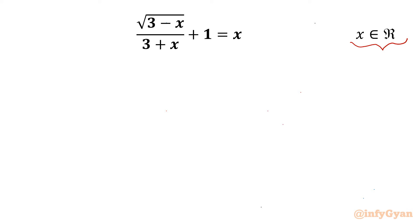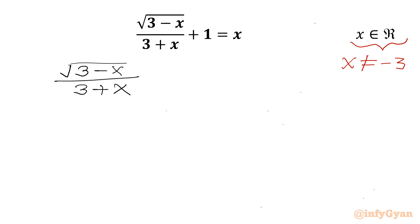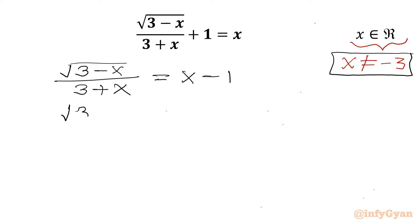Let's get started by writing: the denominator cannot be 0, so x cannot be negative 3. Now I will take away 1 from both sides, so I can write: square root of (3 minus x) divided by (3 plus x) equals x minus 1. Since x is not equal to negative 3, I can cross multiply: square root of (3 minus x) equals (x minus 1) times (x plus 3).